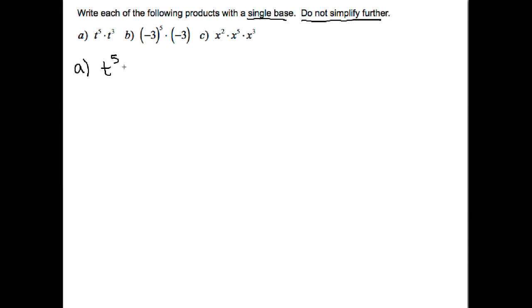We have t to the fifth times t cubed, and the base is base t. So when you multiply with the same base, then you can add the exponents. So we have t to the 5 plus 3, and that would be t to the eighth.